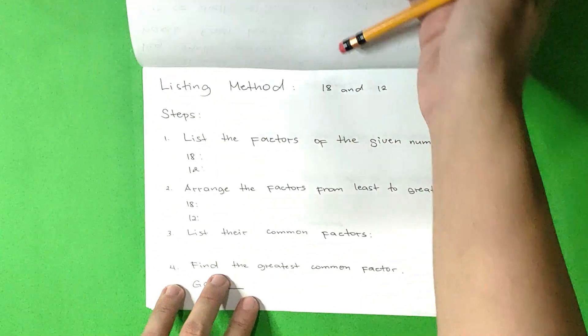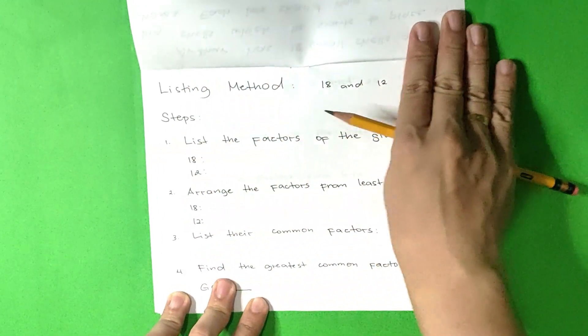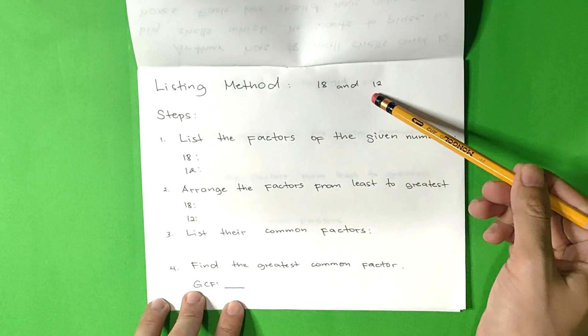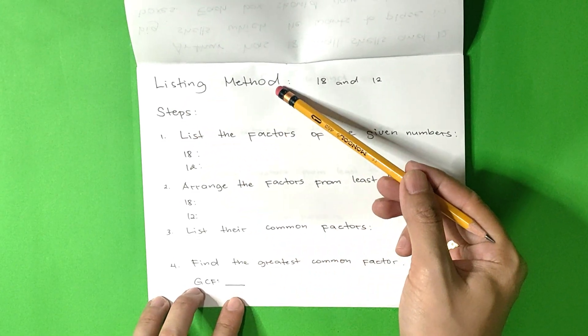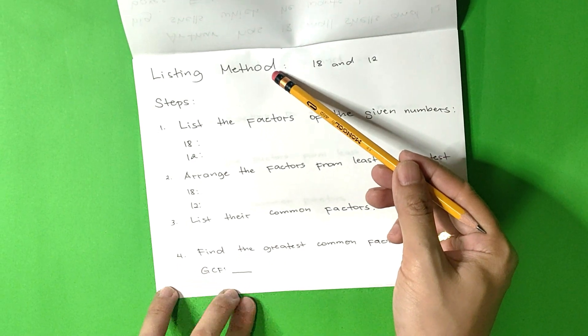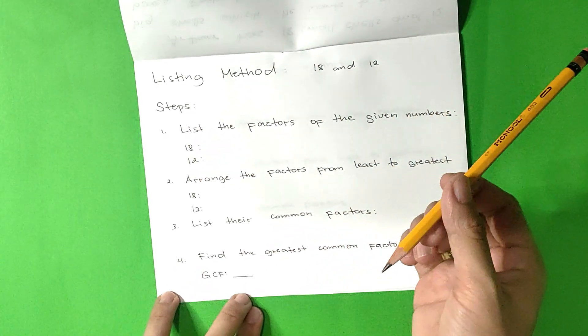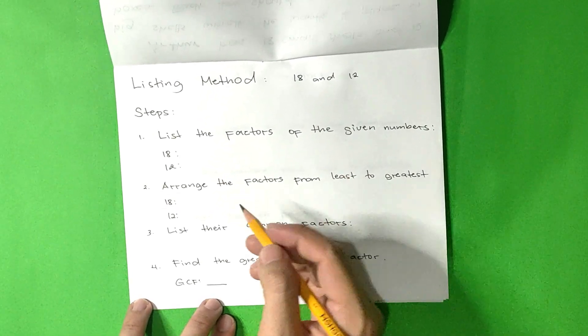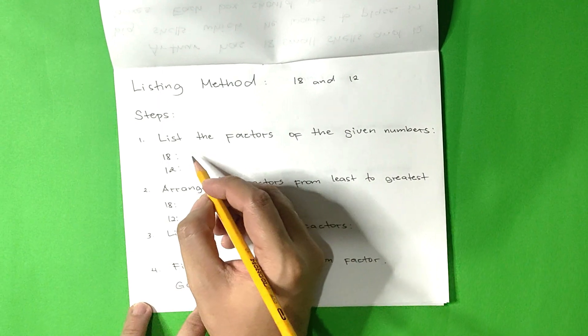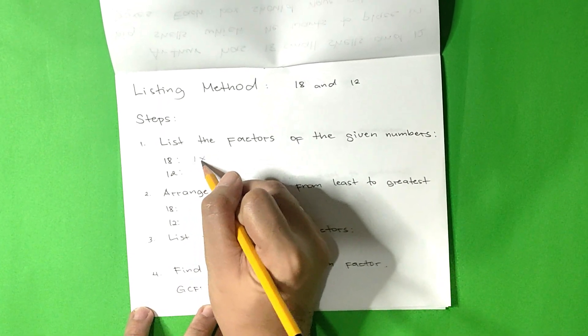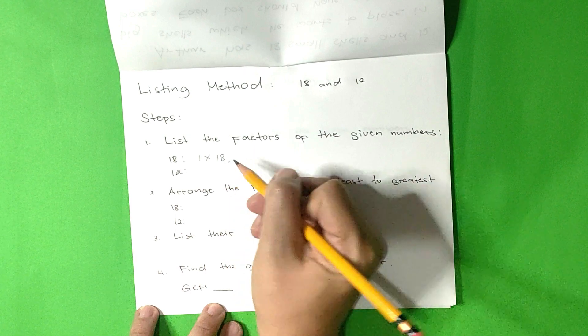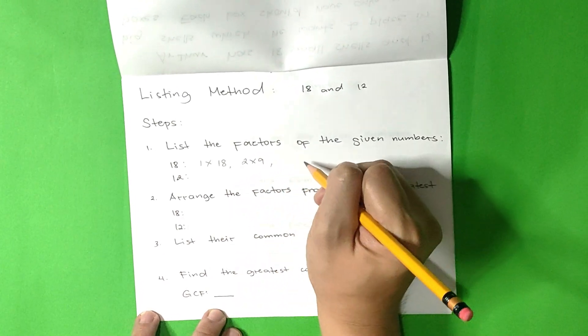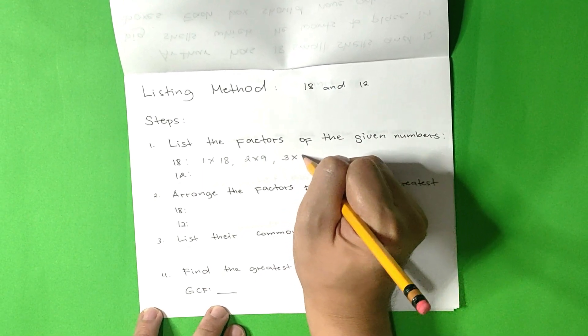To answer the problem, let's find the greatest common factor or GCF of 18 and 12 using the listing method. Follow these steps. Step 1: List the factors of the given numbers. Let's start with number 18. The factors of 18 are 1 times 18, 2 times 9, 3 times 6.